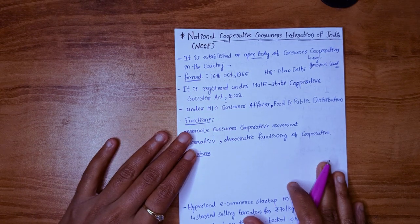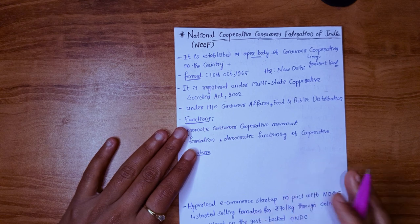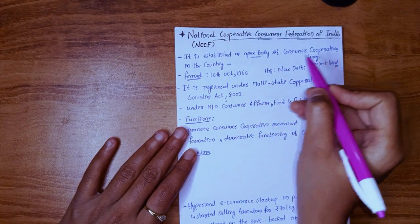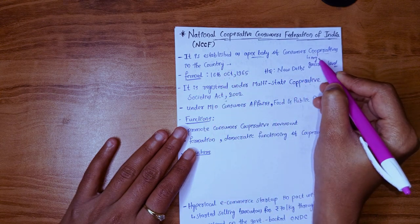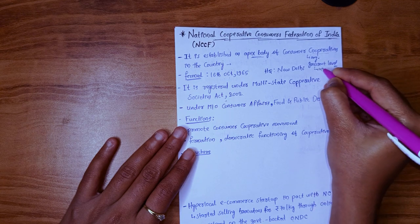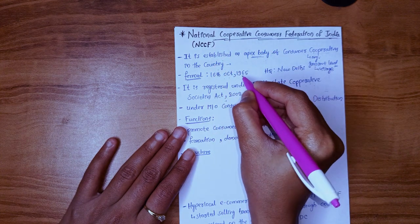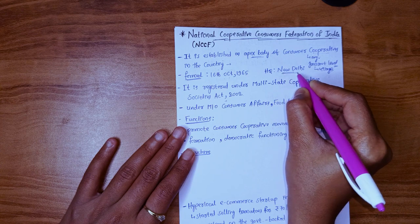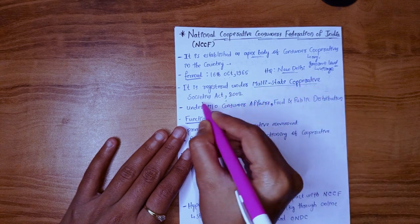Hi guys, welcome to my channel. Today's topic is National Cooperative Consumer Federation of India. It is established as the apex body of consumer cooperatives in our country. Here, cooperatives means organizations which are formed at the grassroots level, that is village level. NCCF was formed on 16 October 1965 and its headquarters is in New Delhi.